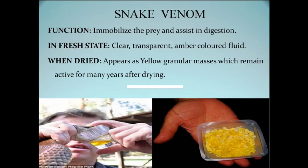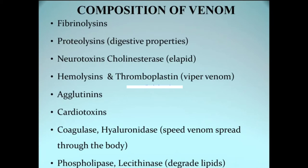Dried venom can still cause toxicity when taken orally or otherwise — it can remain potent. Venom is composed of a wide array of proteins and enzymes. These include fibrinolysins, proteolysins with digestive properties, and neurotoxins or cholinesterase enzyme — predominantly present in elapid venom. Hemolysin and thromboplastin are present in viper venom. Other toxins like coagulase and hyaluronidase break up cell barriers to speed up venom spread. Phospholipase degrades lipids and membranes for rapid spread throughout the prey.